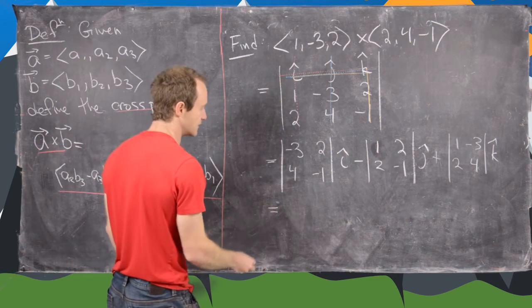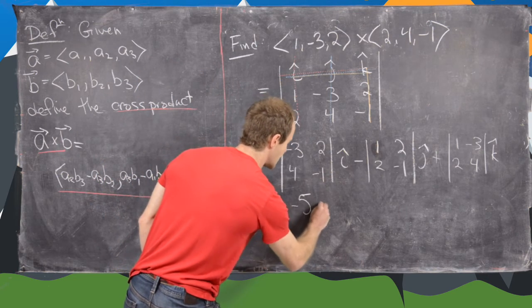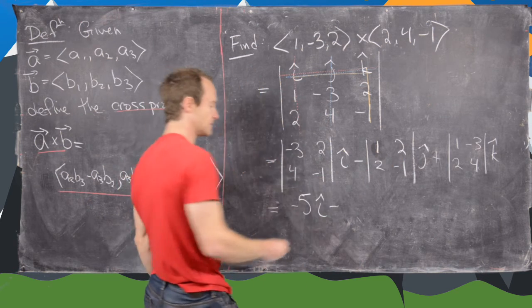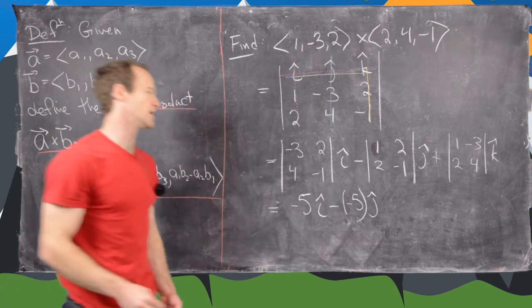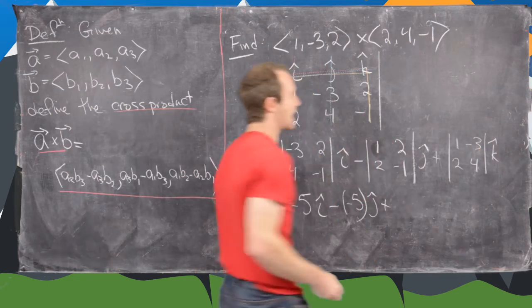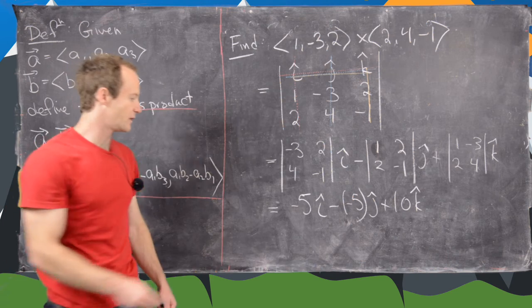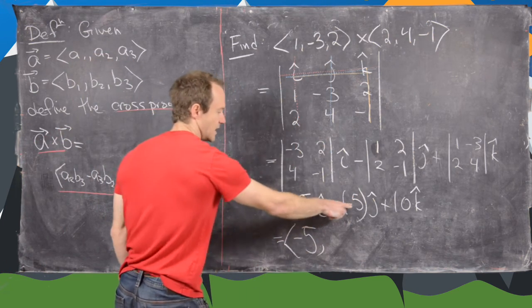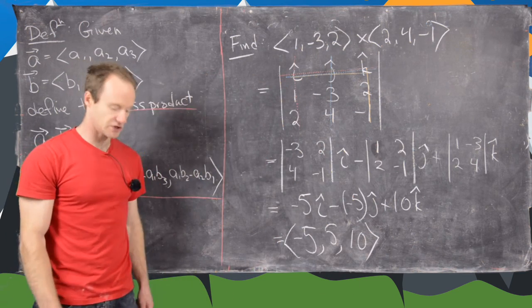Computing those determinants: (−3)(−1) − (2)(4) = 3 − 8 = −5 in the i direction. Then −[(1)(−1) − (2)(2)] = −[−1 − 4] = −(−5) = +5 in the j direction. And (1)(4) − (−3)(2) = 4 + 6 = 10 in the k direction. So the cross product of (1, −3, 2) and (2, 4, −1) is (−5, 5, 10).